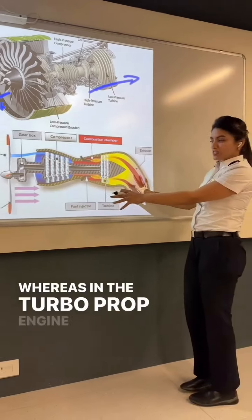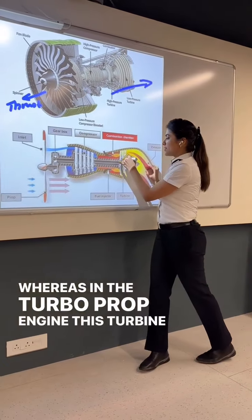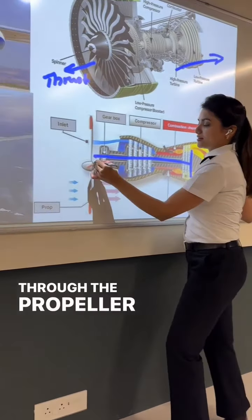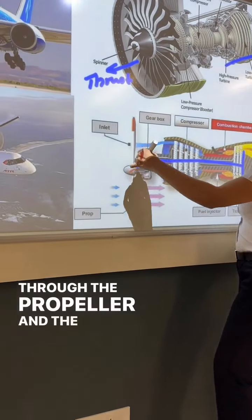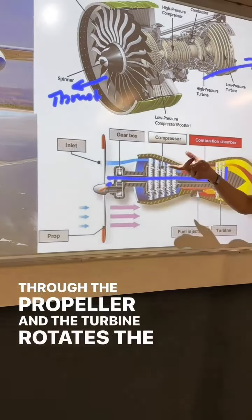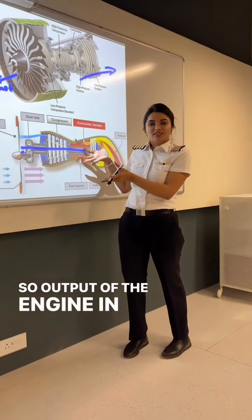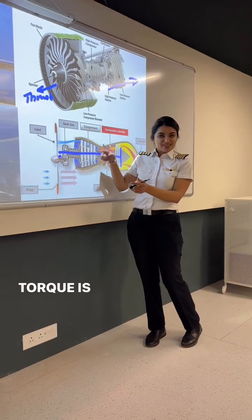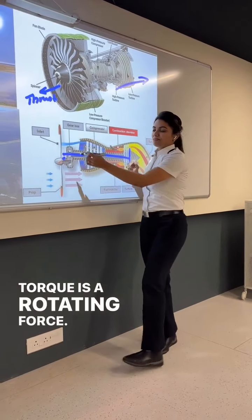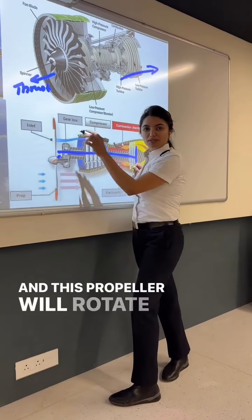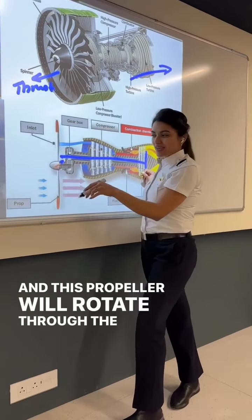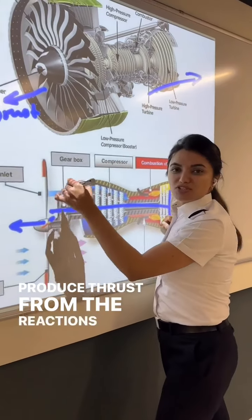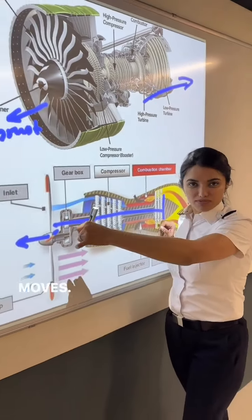Whereas in the turboprop engine, this turbine is connected to the propeller and the turbine rotates the propeller. So the output of the engine in the turboprop will be torque. Torque is a rotating force and this propeller will rotate through the air and will produce thrust from the reactions of air through which it moves.